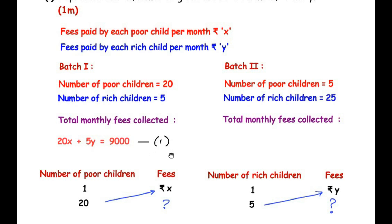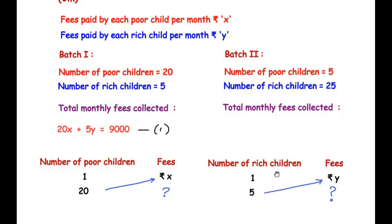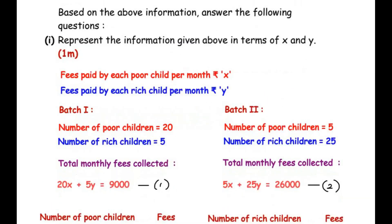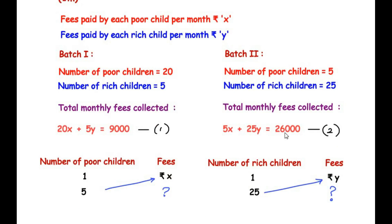Using the same cross multiplication method for batch 2: there are 5 poor children, so the fees from poor children is 5x. For 25 rich children the fees is 25y. The total fees collected from batch 2 was rupees 26,000, giving us equation 2: 5x + 25y = 26,000.